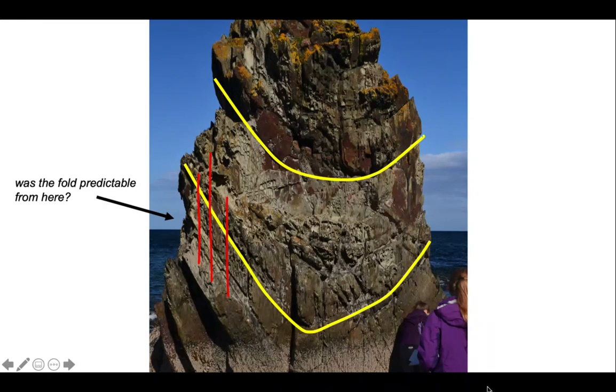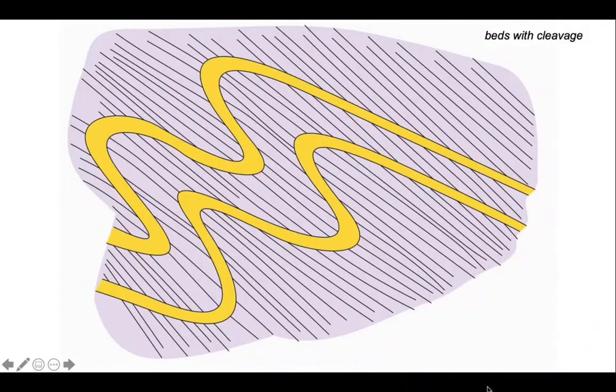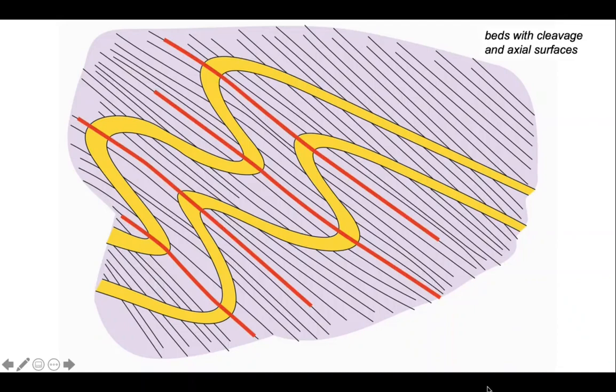Let's consider how bedding and cleavage relate to one another in folds. Here's a cartoon. Imagine these yellow layers are sandstone embedded within a purple siltstone unit which has a cleavage picked out by thin black lines. The cleavage is almost parallel to the axial surfaces of the folds, so we call this axial planar cleavage.